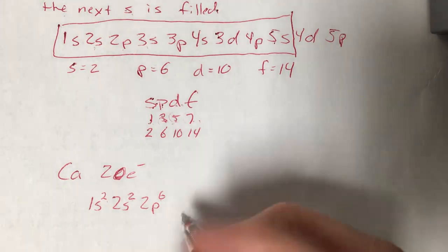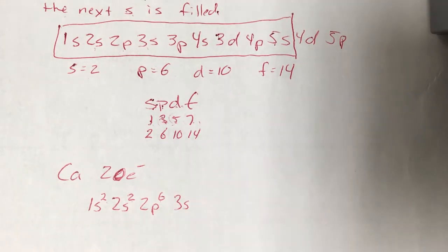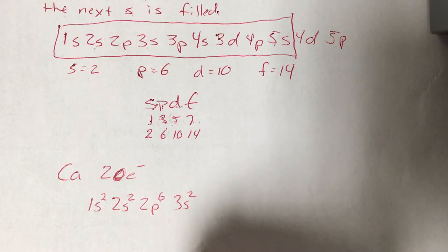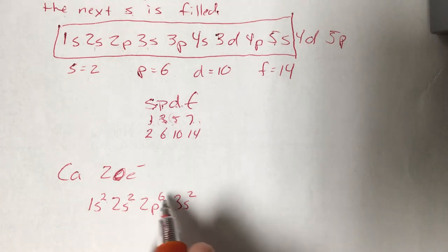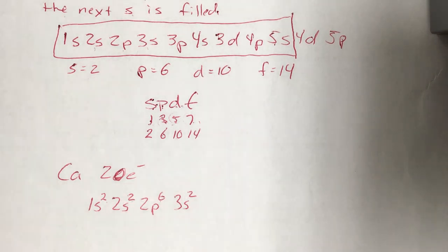My next orbital is 3s. S orbitals hold 2 electrons. 2 plus 2 is 4, plus 6 is 10, plus 2 is 12. I've got 12 of my 20 done, I've got 8 more to go.